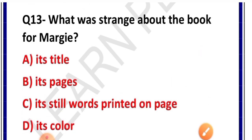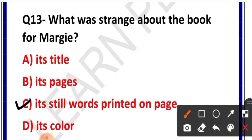Question number 13: What was strange about the book for Margie? Options: A. Its title, B. Its pages, C. Its still words printed on pages, D. Its color. Correct answer is option C — its still words printed on pages. Margie ke liye yeh baat bahut ajeeb thi ki is book mein jo words chhape hue hain, woh abhi bhi still hain — matlab woh hill bhi nahi rahe, aur jaise kai saal pahle chhape the, waise hi padhe hain.